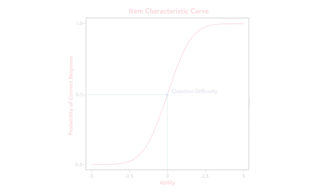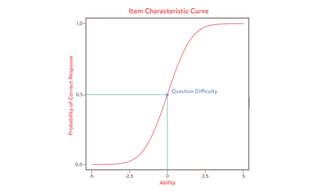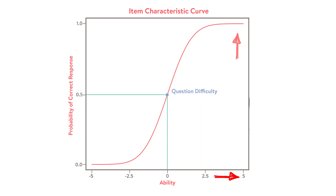If you were to plot the probability curve, it would look like this. As the ability increases, the probability of answering the question goes up. For example, at ability level 5, the probability is 0.98, and at 0, it's 0.5.